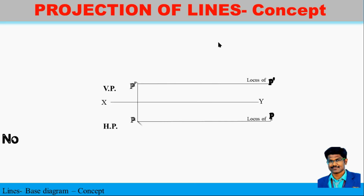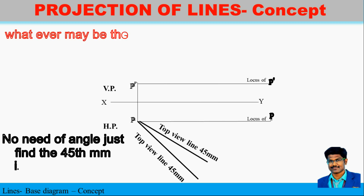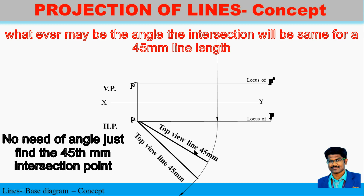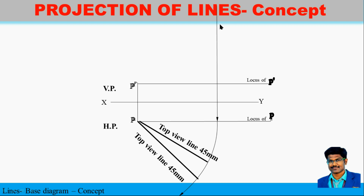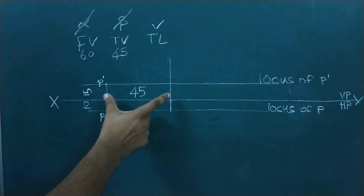Now what we can do is measure the top view line distance — 40 mm — in compass and rotate that line up to the locus of B, but we don't know the angle; we need to find this intersection point. Then draw a perpendicular line and extend it. From HP, extend that line up to the VP, but we don't know the exact locus position of Q-dash. Note that you can also go with the front view line details — either approach works.